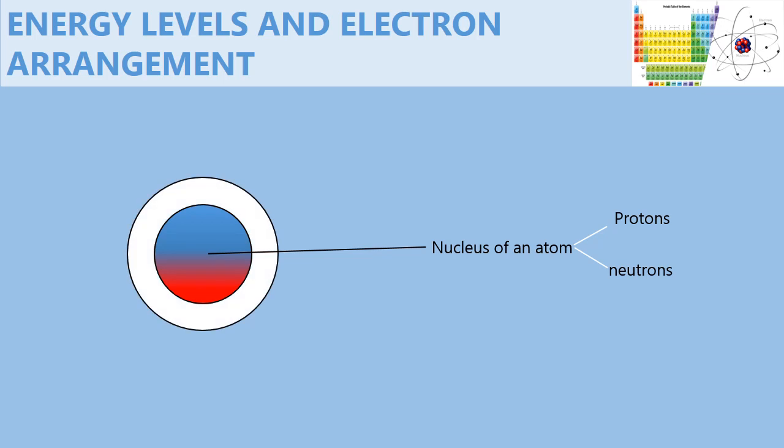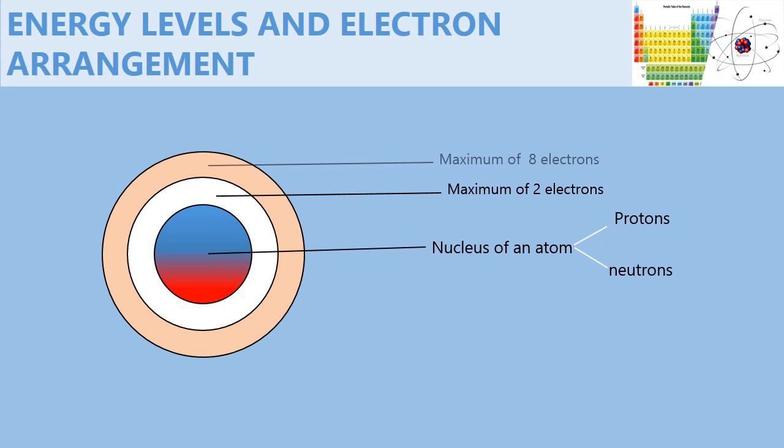The first energy level is the one closest to the nucleus, and we draw it as a circle around the nucleus. This energy level can hold a maximum of 2 electrons. Once this energy level is filled up, we move to the next energy level, which can hold a maximum of 8 electrons.